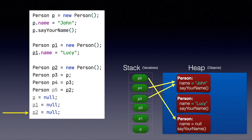It doesn't matter if we access from p3 or p4. The person whose name we haven't assigned — which is null — can be referenced by p5. Now, one thing to note that I forgot to mention: since p3 and p4 are pointing to the same person, let's say we use p3 to change the name.